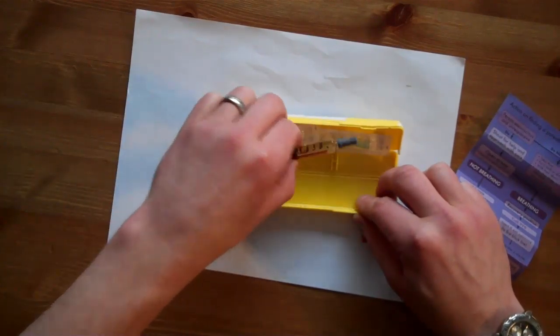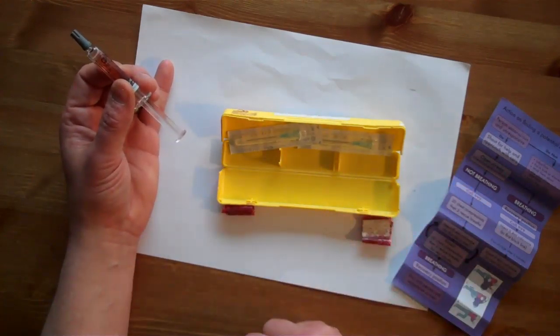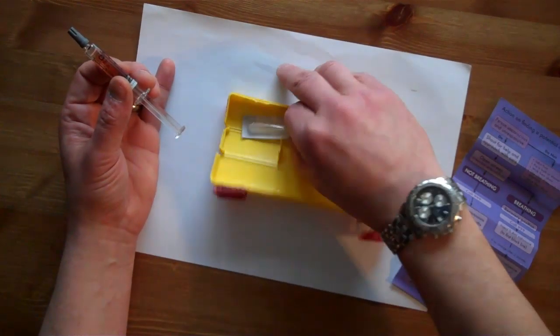We pick up the pre-filled syringe, removing it from the cradle inside the yellow box and we pick up one of the blue muscle needles.